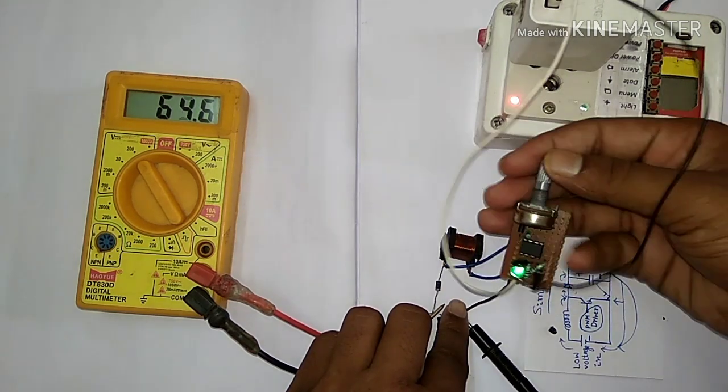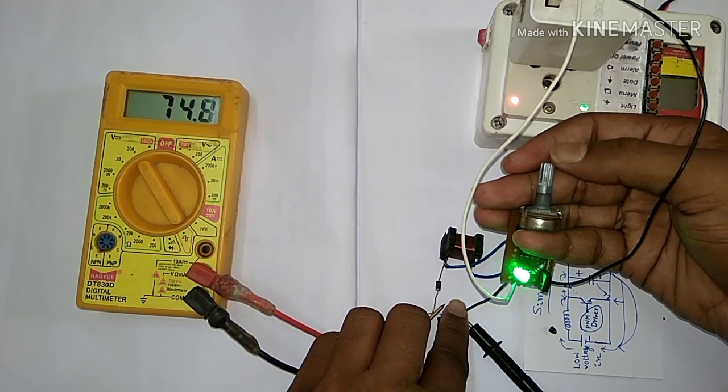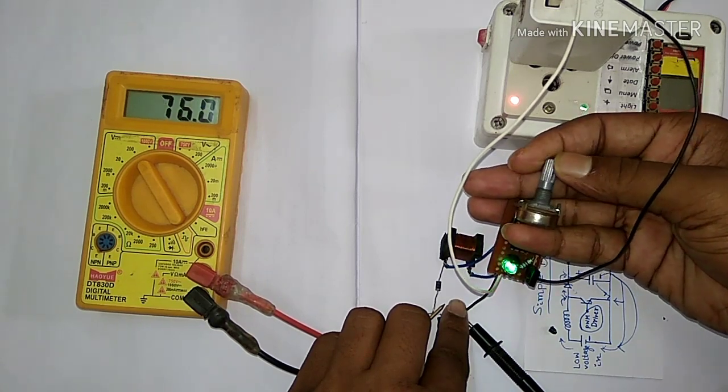When I modify the duty cycle with the potentiometer, it increases the voltage. In my circuit, the voltage is fluctuating because I have used a low value capacitor.